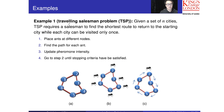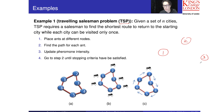This example is about the very famous Traveling Salesman Problem, or TSP. Given a set of n cities — for example, node one, node two, node three, node four, node five, node six — they can be in different positions, randomly placed like this.